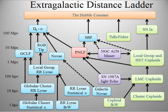Another class of physical distance indicator is the standard ruler. In 2008, galaxy diameters have been proposed as a possible standard ruler for cosmological parameter determination. More recently, the physical scale imprinted by baryon acoustic oscillations in the early universe has been used.